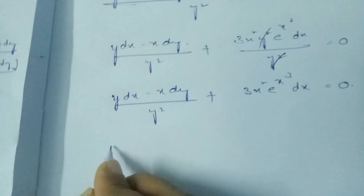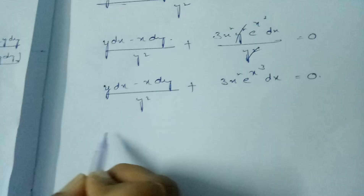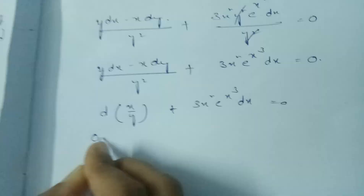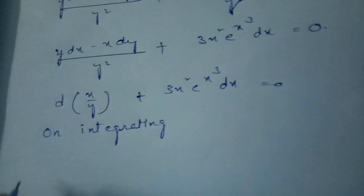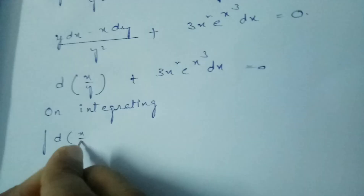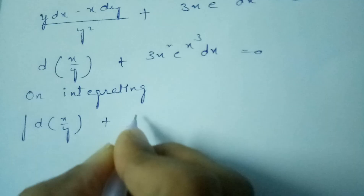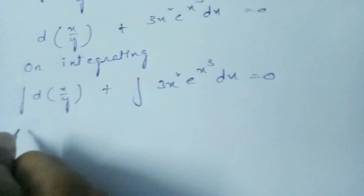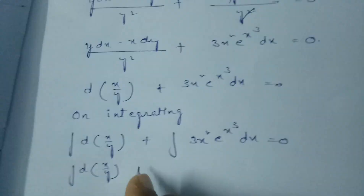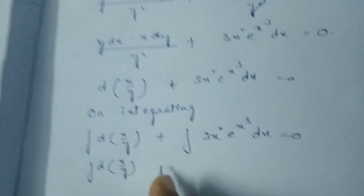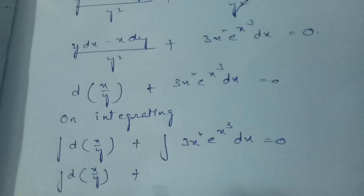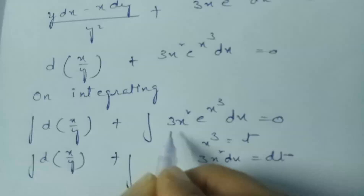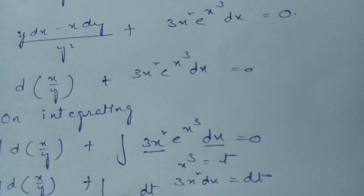Introducing this formula, instead of writing (y dx minus x dy)/y², I can write d(x/y) + 3x² · e^(x³) dx = 0. Now integrating the equation throughout. For the second term, let x³ = t, so 3x² dx = dt. Substituting, it becomes the integral of e^t dt.